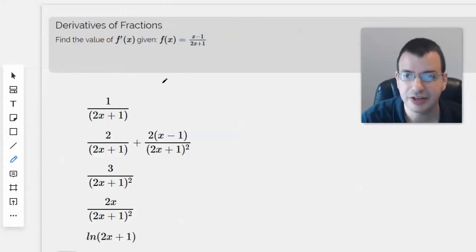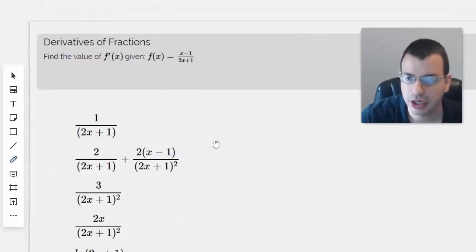Find the value of f prime of x given that f of x equals x minus 1 divided by 2x plus 1.